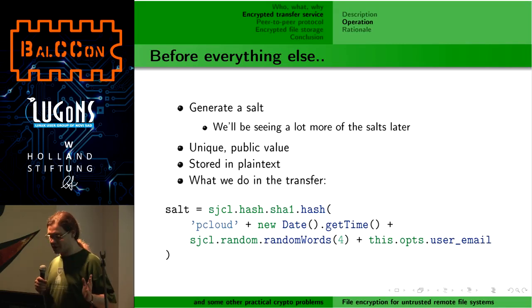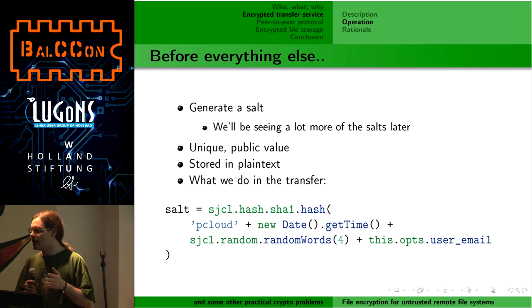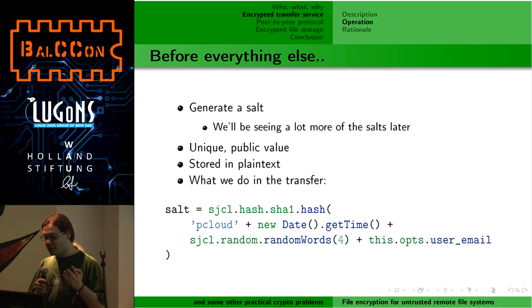First you generate a salt. Salting is extremely important — anyone who has done authentication has an idea what a salt is. It's a unique value that does not repeat, which is public, and which you use to modify all your key generation so you do not get repeated keys. Here is an example of how we generate it: we take the date and time, some random data, and the user's email, so that if anyone tries to send the same thing ten times very fast, they will not get the same salt each time.